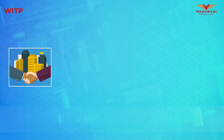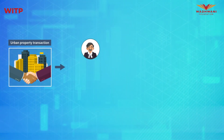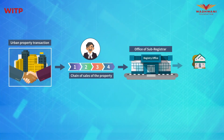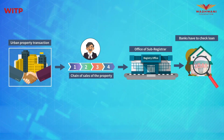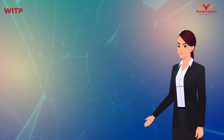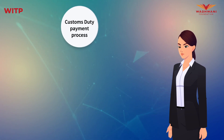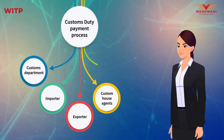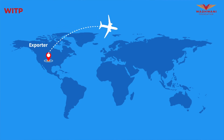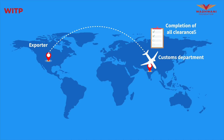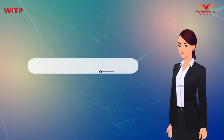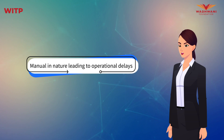For example, in the case of an urban property transaction, lawyers go through a chain of sales of the property from various registers kept in the office of the sub-registrar, and banks have to check whether any other bank has given loans on the property. Let's take the use case in customs. The customs duty process involves multiple stakeholders: the customs department, the importer, the exporter, custom house agents and banks. The goods shipped by an exporter come to the customs department, and on completion of all clearances and payments made by the importer, customs releases the goods. The process is time-consuming, needs a lot of paperwork and is mainly manual, leading to operational delays as many parties are involved.